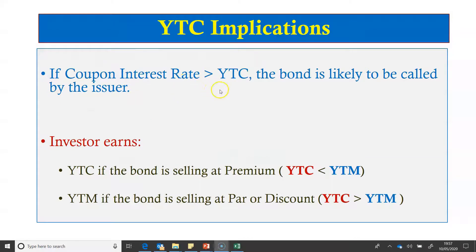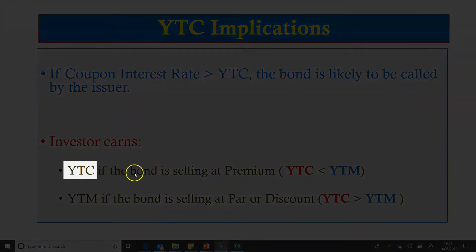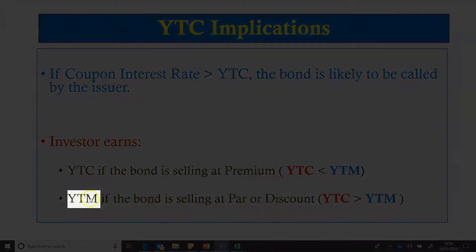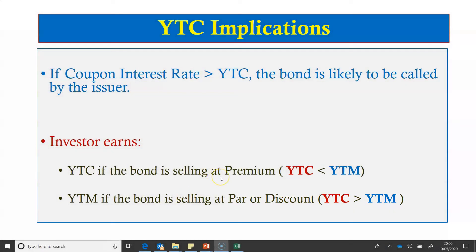If the coupon rate is more than the YTC, the bond is likely to be called by the issuer, who can then issue a new bond at a lower interest rate and save on interest expenses. The investor will earn the YTC if the bond is selling at a premium, and in such a case the YTC is less than the YTM. The investor earns the YTM if the bond is selling at par or at a discount from par value, and in such a case the YTC is greater than the YTM. In the next video tutorial, we will learn about duration and convexity measures of bonds.